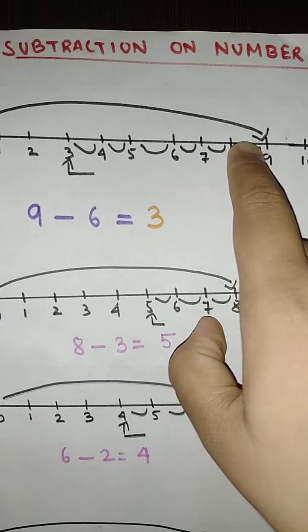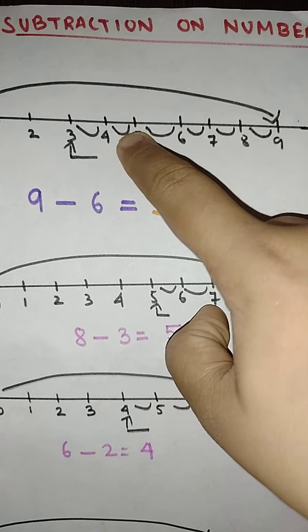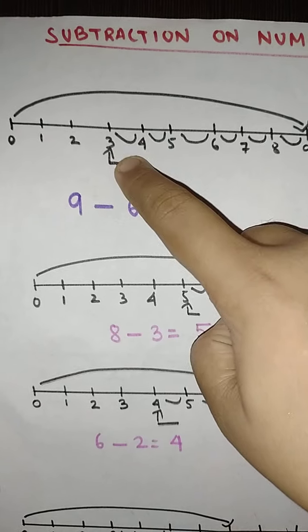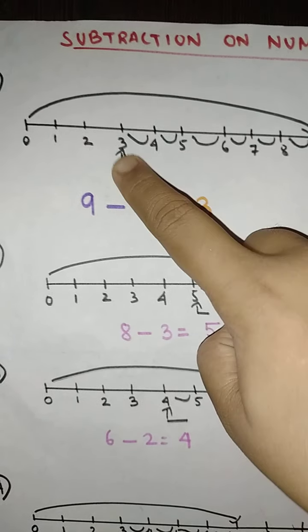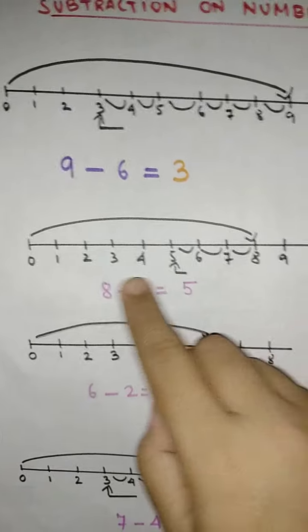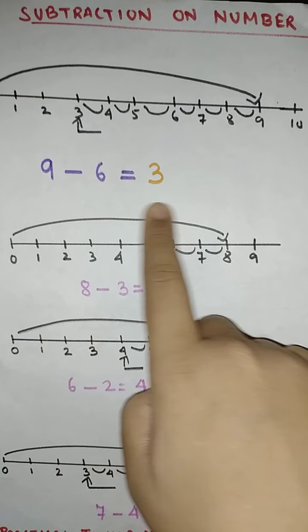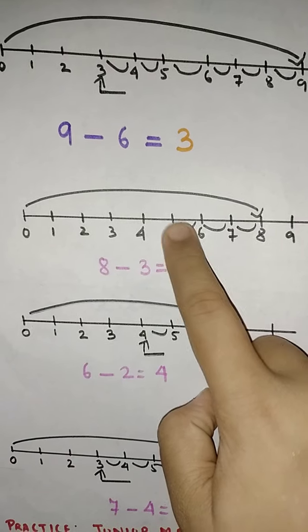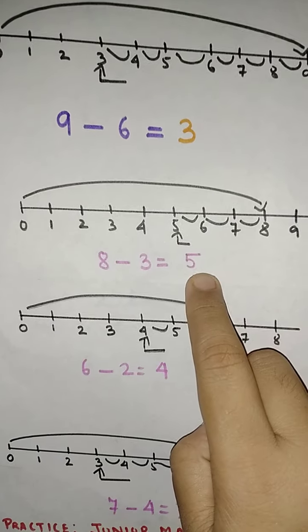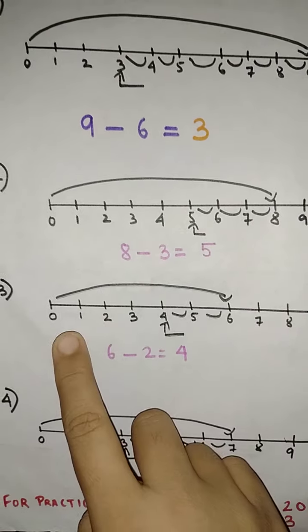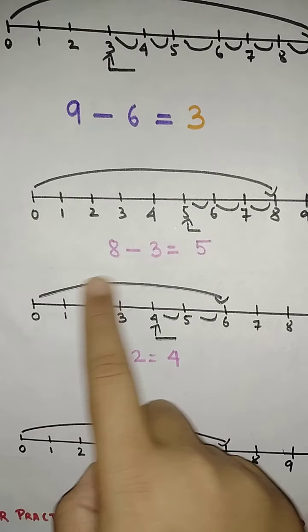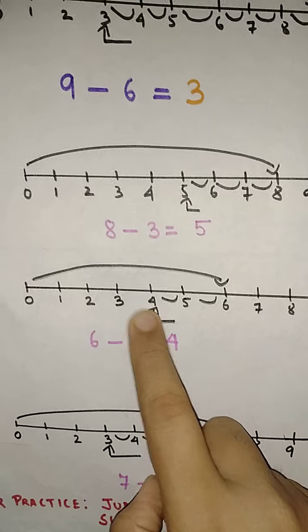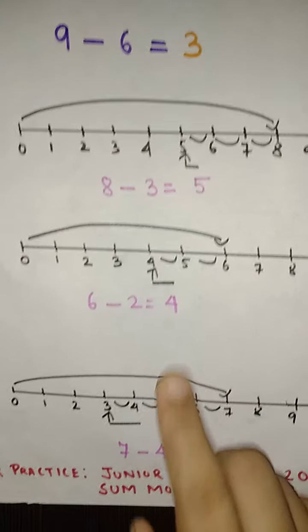And after this 1, 2, 3, 4, 5 and 6. So I have to stop here and 3 is my required number. In the same way this is my 8. I have drawn a big arrow starting from 0 till 8 and after that 1, 2 and 3. So 5 is my required number. Here also the same thing from 0 till 6 I have drawn one big arrow and here 1, 2. So this 4 is my required number.